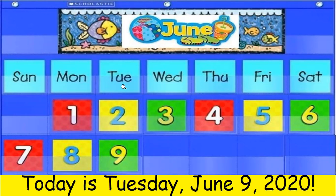Today is Tuesday. Now, let's look at the last number on the calendar. Who recognizes that number? Do you know what number that is? Let's count from the beginning. One, two, three, four, five, six, seven, eight, nine. The number is nine.